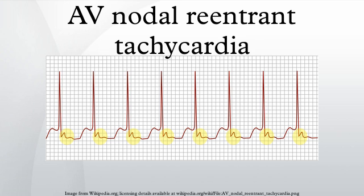In common AVNRT, the anterograde conduction is via the slow pathway and the retrograde conduction is via the fast pathway. Because the retrograde conduction is via the fast pathway, stimulation of the atria will occur at the same time as stimulation of the ventricles. As a result, the inverted P waves may not be seen on the surface ECG since they are buried within the QRS complexes. Often the retrograde P wave is visible but in continuity with the QRS complex, appearing as a pseudo A' wave in lead V1 or a pseudo S' wave in the inferior leads.